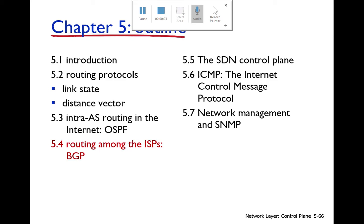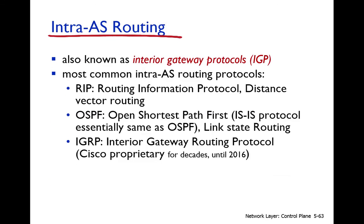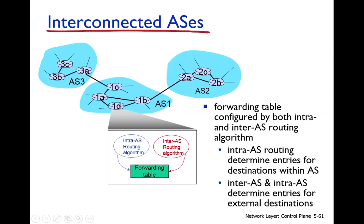We have introduced autonomous systems and discussed two types of routing protocols. One is called intra-autonomous system routing, used by routers within an autonomous system, where distance vector or link state routing protocols can be used. The other is inter-autonomous system routing, used for reachability between or among autonomous systems.